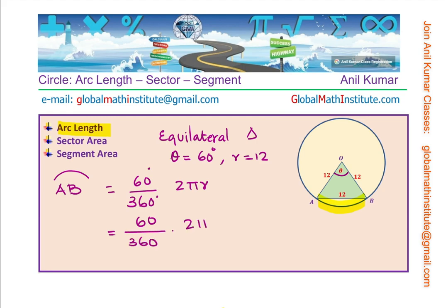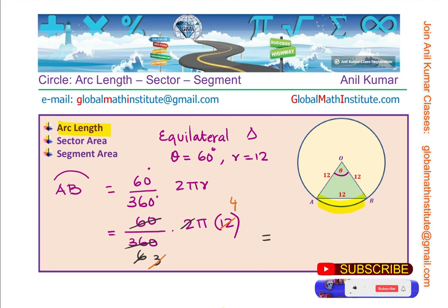Since r is 12, we can substitute this value here and we get 60 over 360 degrees times 2π times 12. Now you can simplify this expression: 60 goes 6 times, 2 goes 3 times, and then you can simplify further, dividing 12 by 3 is 4.